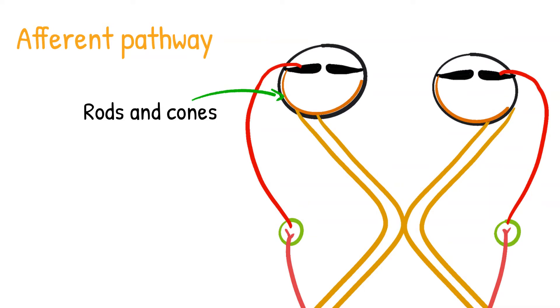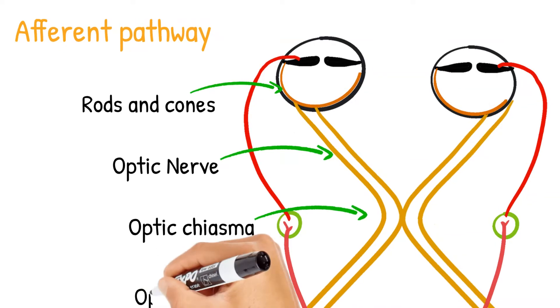When light is flashed on the eyes, the pupillary fibers run in the optic nerve. From there they cross in the optic chiasma and reach the optic tract.